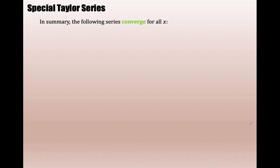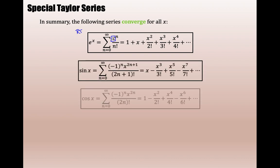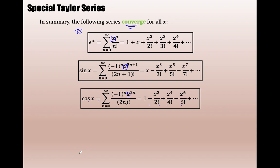The following series converge for all x. I proved it with the ratio test for e to the x — that you could plug in any x and get a convergent numeric series. I didn't prove it for sine x and cosine x because they have alternating signs; that's something we'll do in calculus with a version of the ratio test that allows alternating signs. But any x you replace in these series will converge to the function e to the x for all x. This infinite polynomial is exactly sine x for all x. This infinite polynomial is exactly equal to cosine x.